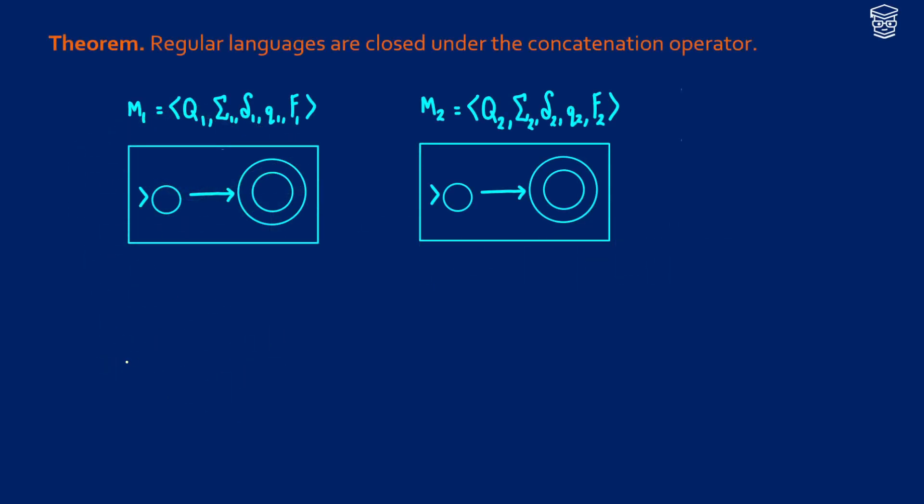This means that if we can take two machines, so let's say that machine 1 accepts language A1 and machine 2 accepts language A2, we need to create some machine N that accepts these two languages concatenated with each other. So this means back-to-back.